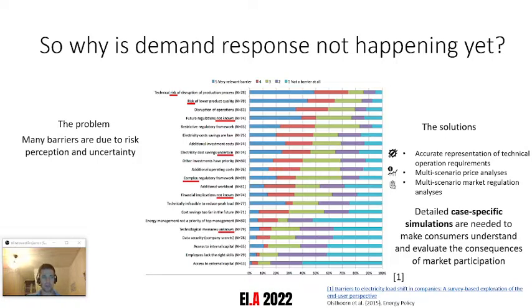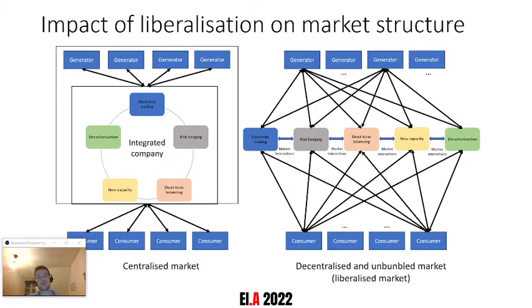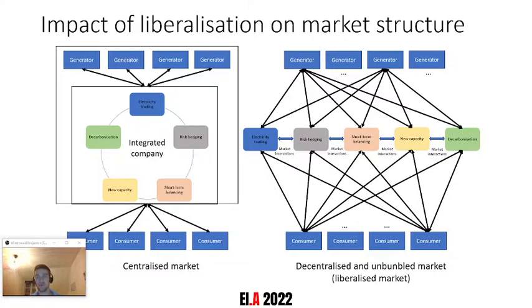That brings us to the problem of the market itself. Market structures have evolved in recent decades from a more centralized monopolistic structure, where the consumer would buy energy from one single agent, to a more destructured system where consumers could buy energy in one market, but also provide short-term balancing services in another market, buy additional capacity in a third market, etc. This creates quite a complex ecosystem which consumers would need some tools to help them navigate.